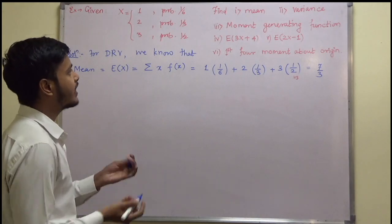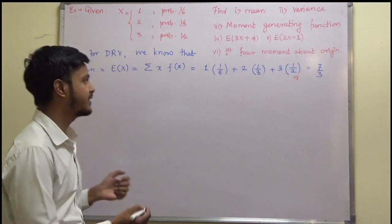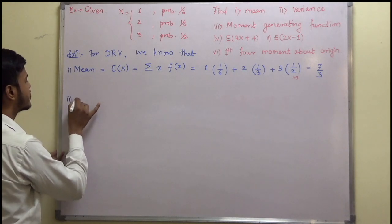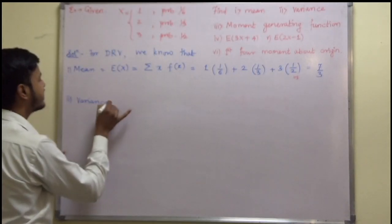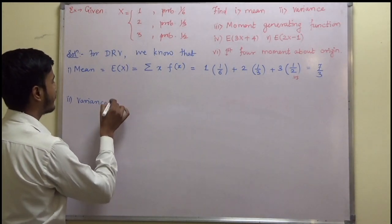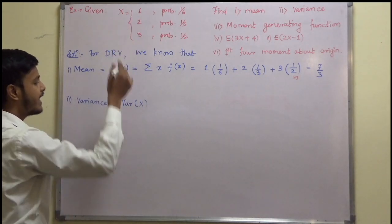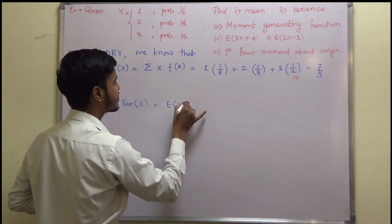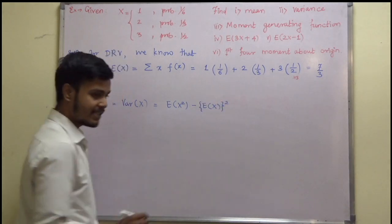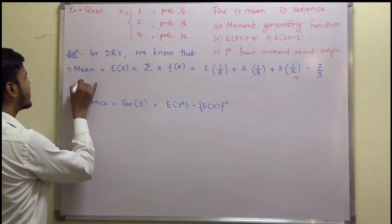Now let us find out the next value — the variance. We know that variance, denoted by Var(X), is given by the expectation of X squared minus the expectation of X whole squared. I already have E(X), so I need to find out E(X²).